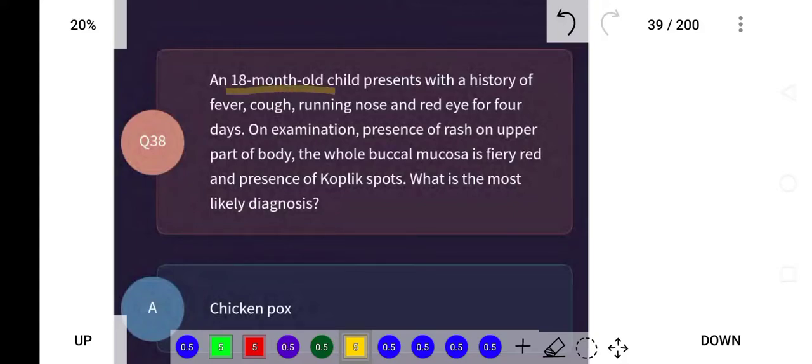An 18-month-old child presents with a history of fever, cough, runny nose, and red eye for four days. On examination, he has a rash on the upper part of the body, whole buccal mucosa is fiery red, and presence of Koplik spots. What is the most likely diagnosis?